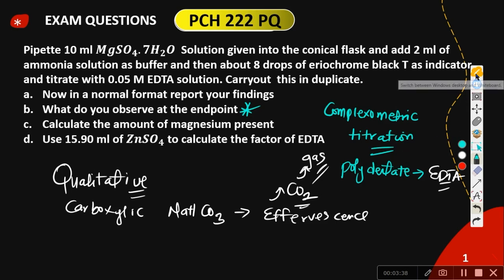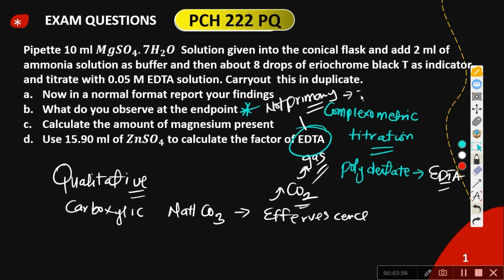The next step is to calculate the amount of magnesium present. First we calculate the factor of EDTA because EDTA is not a primary standard — it is a secondary standard, meaning it is not sufficiently pure. You have to standardize it to correct anything that may have gone wrong. We standardize EDTA using zinc sulfate, which is a primary standard, in a process called standardization.